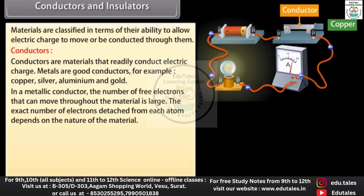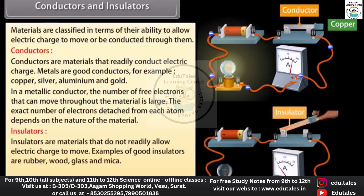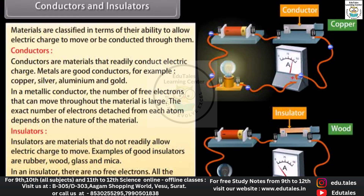The exact number of electrons detached from each atom depends on the nature of the material. Insulators are materials that do not readily allow electric charge to move. Examples of good insulators are rubber, wood, glass, and mica. In an insulator, there are no free electrons — all the electrons are bound to their parent atoms and conduction of charge is not possible.